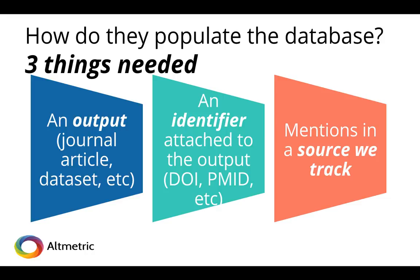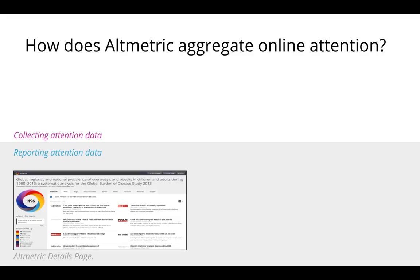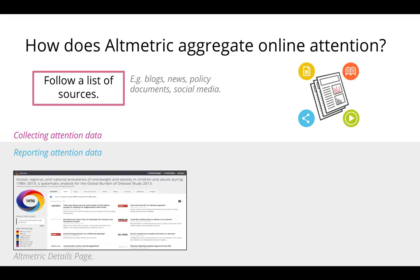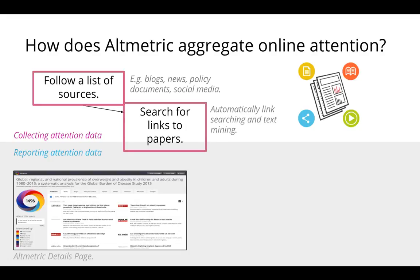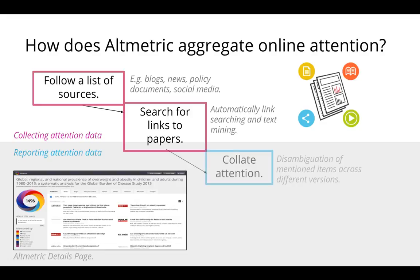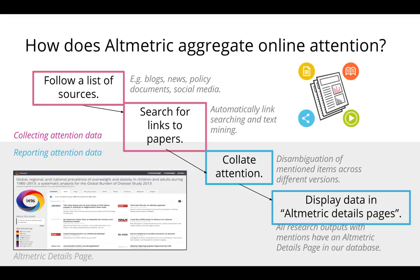Altmetrics will track the source of mentions depending on whether it's got a DOI, PMID, etc. It follows a list of sources — blogs, news policy documents, social media — and searches for links to the papers. It automatically looks for links and will text mine to find the actual papers being mentioned, then collates all this attention across different platforms and displays it in the altmetric display pages, so you can see all this attention in one place.